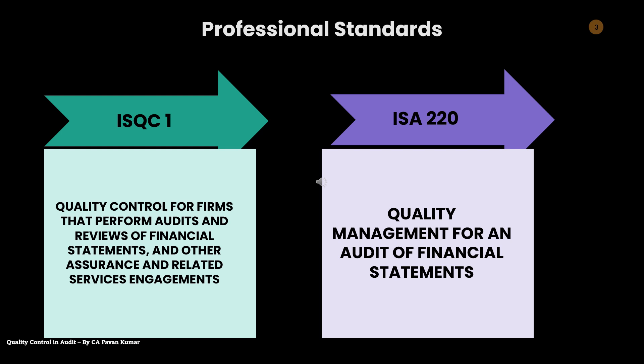ISQC 1 speaks about quality control for firms — these are the accounting and auditing firms. These auditing firms are known for performing audits, conducting reviews of financial statements, or performing certain assurance and related service engagements. So: one, they conduct audits; two, they conduct reviews; three, they perform activities involving assurance and related services. Those firms performing audits, reviews, or any other related services need to comply with ISQC 1. This is a firm-wide quality control standard. Then comes the second standard, ISA 220.